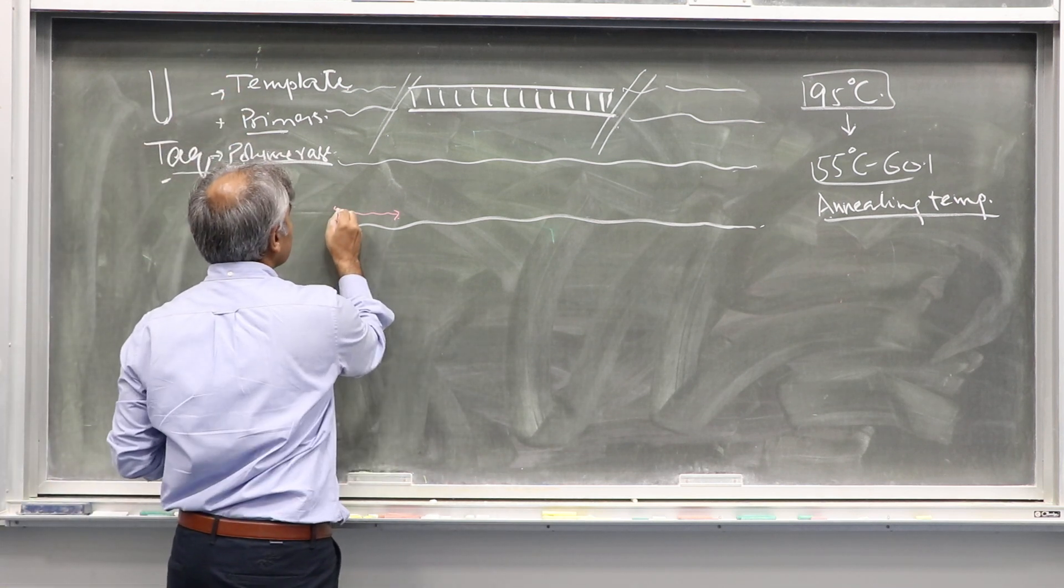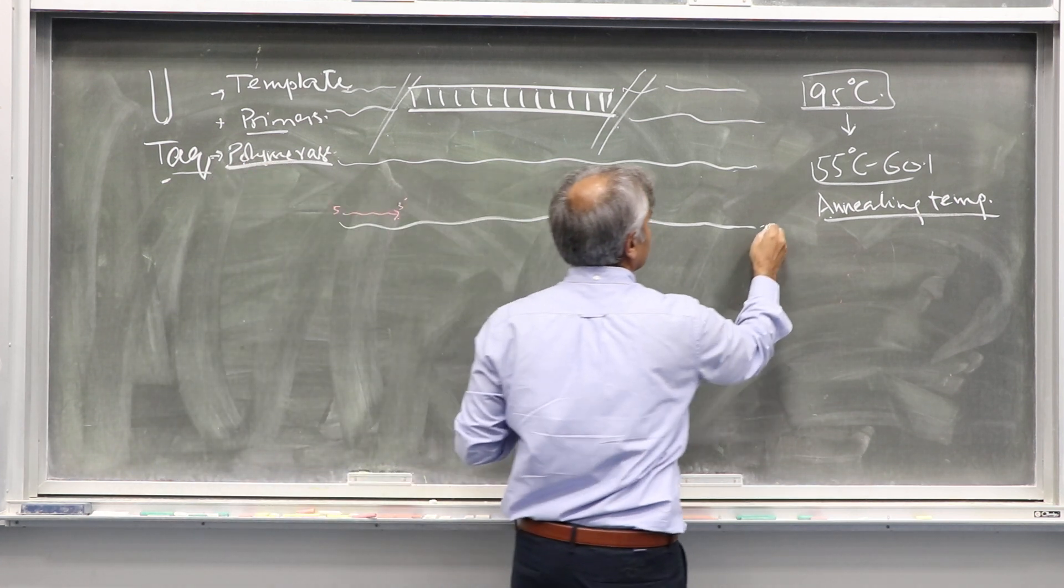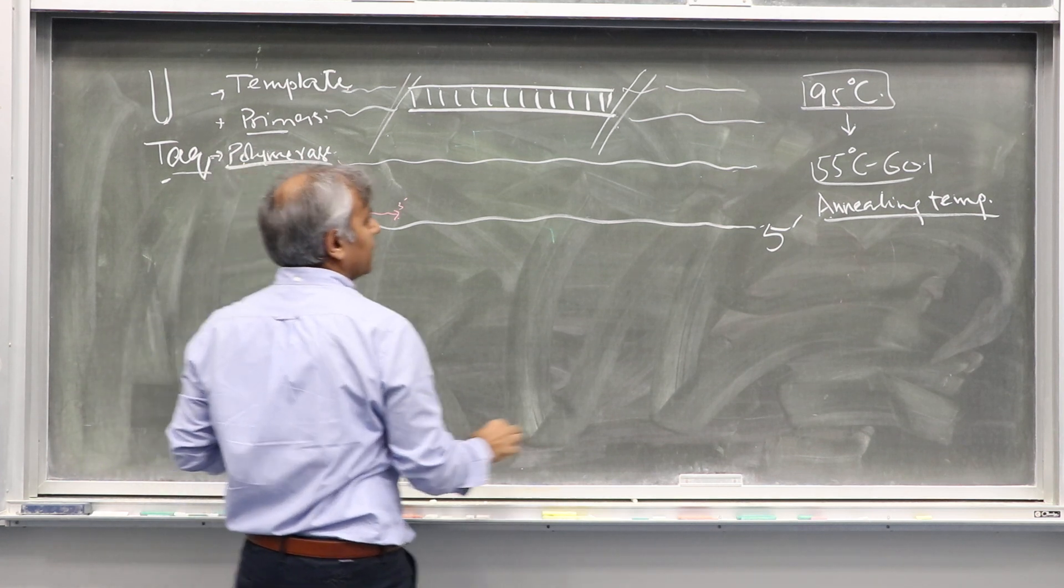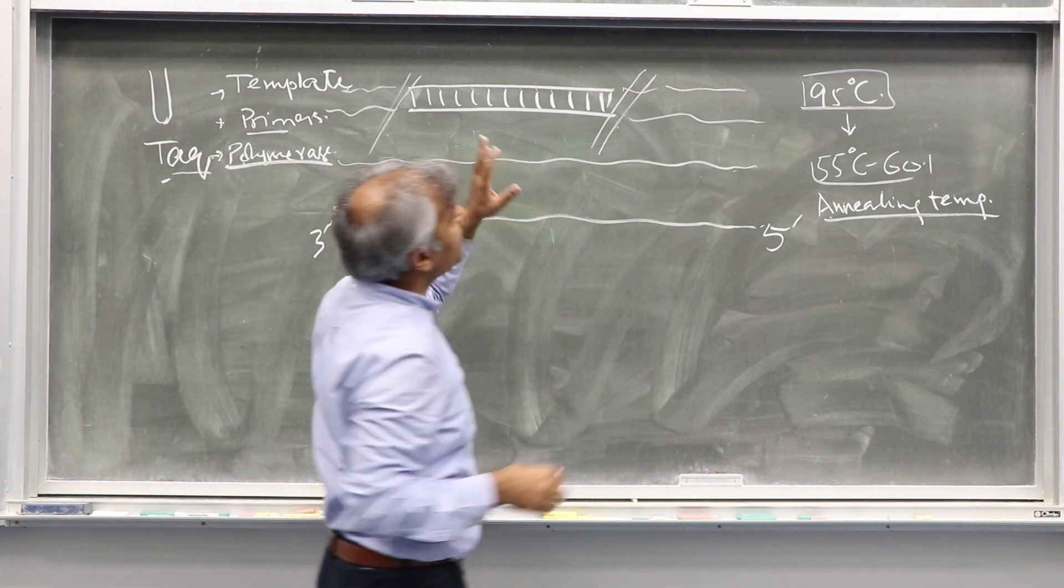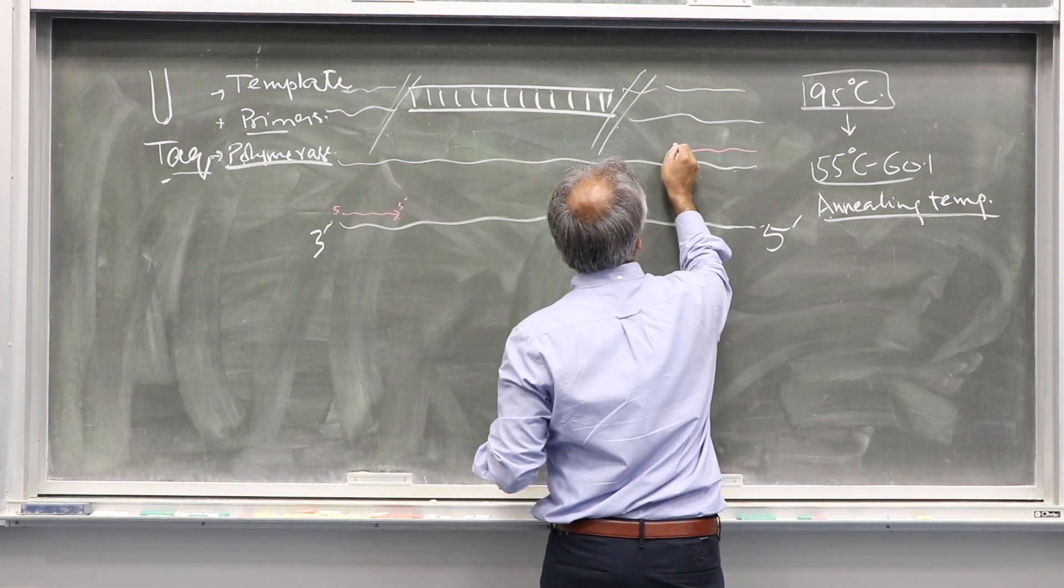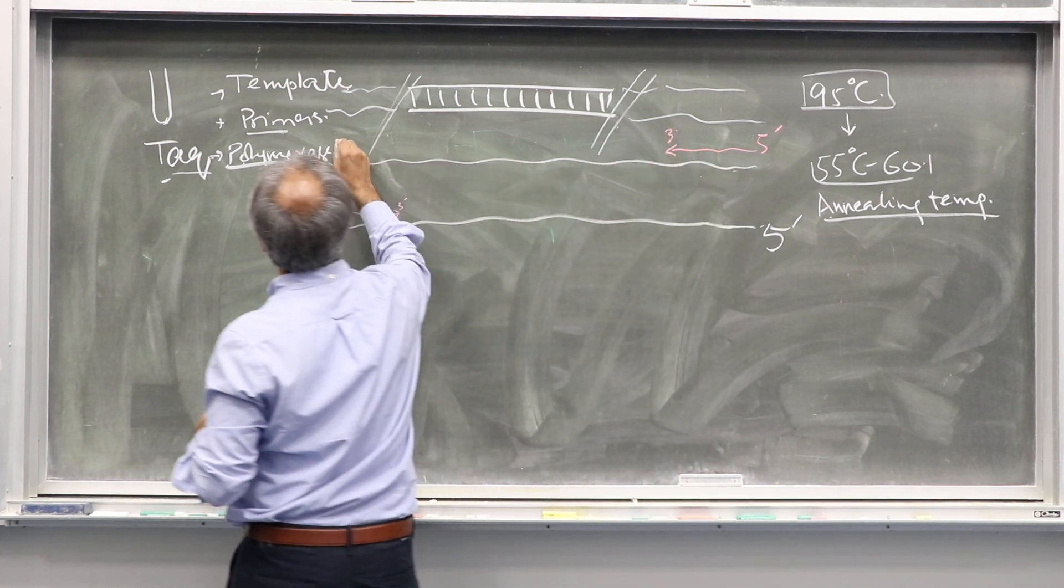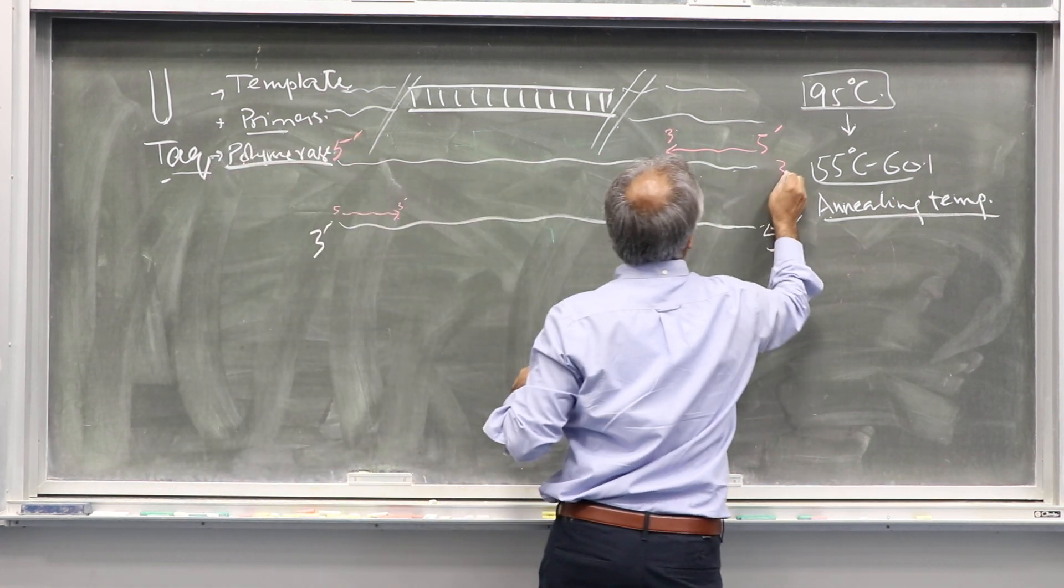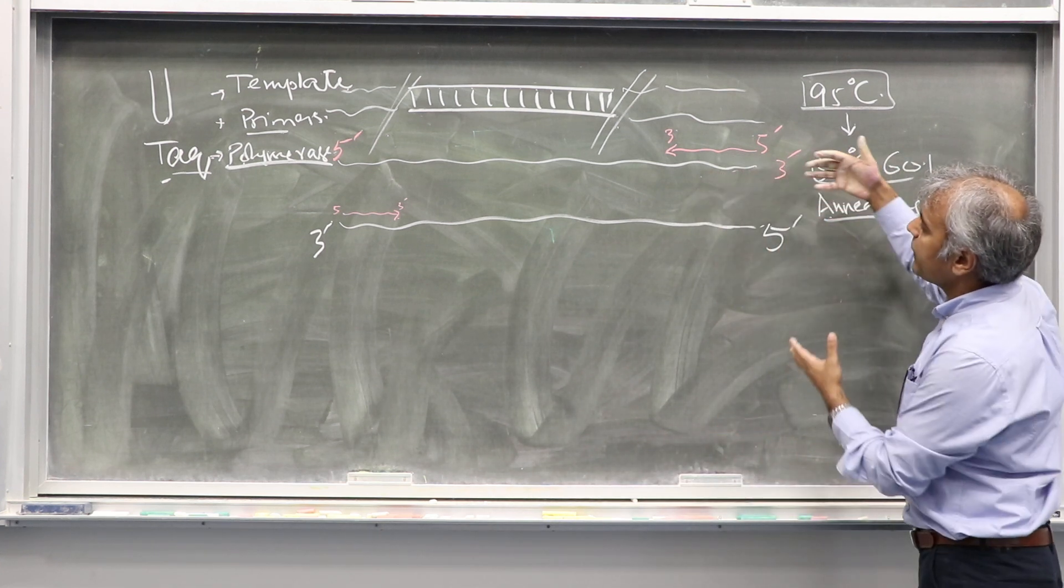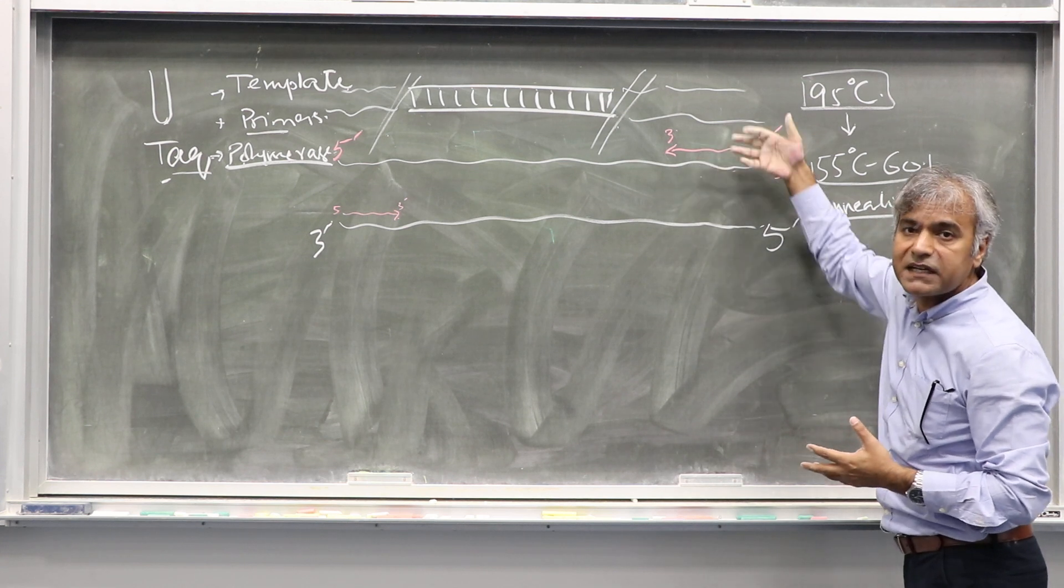Then the second primer, which was GTGTAA on this side, is going to bind. Remember, the orientation of this top strand was five prime to three prime. Annealing temperature allows primers to recognize complementary sequence and bind to specific sequence.